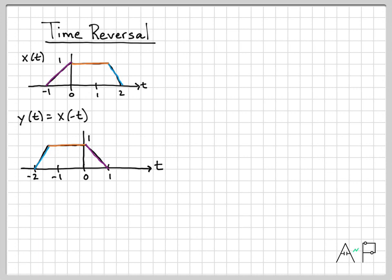After you do this a few times, it's not too bad. Just look at the time interval, negate the whole thing, and sketch it backwards along the axis. If you need to, you can always just pick individual points and time reverse them to see where they end up. That's another easy way to do it. When you have a signal as a plot and need to time reverse it, that's the method to follow.